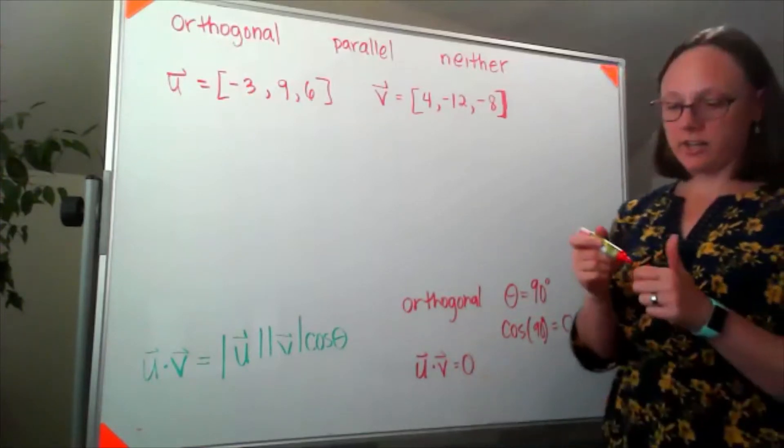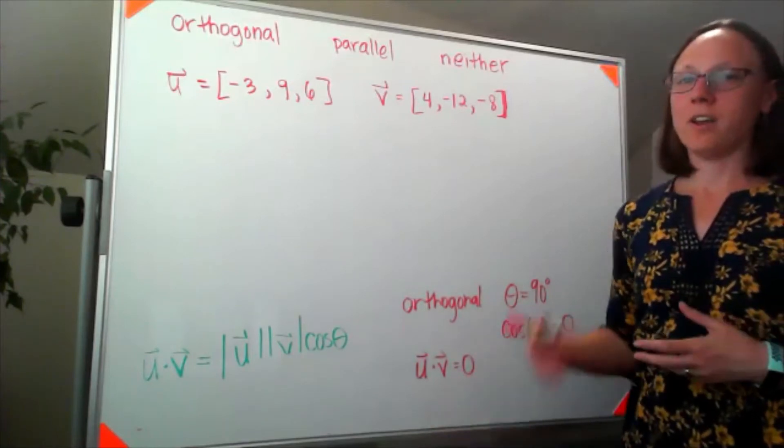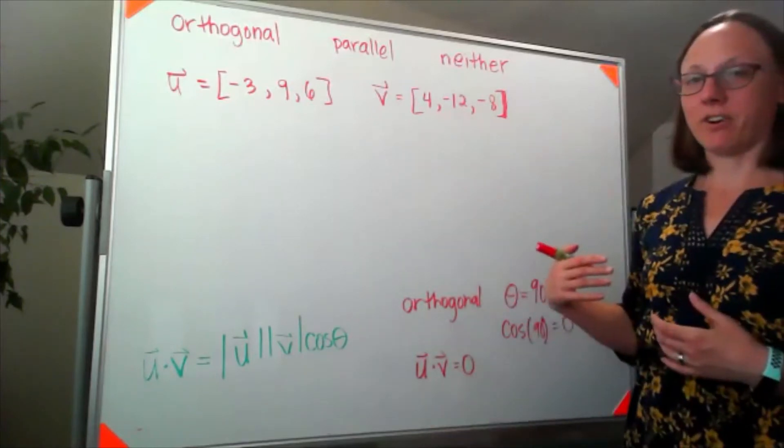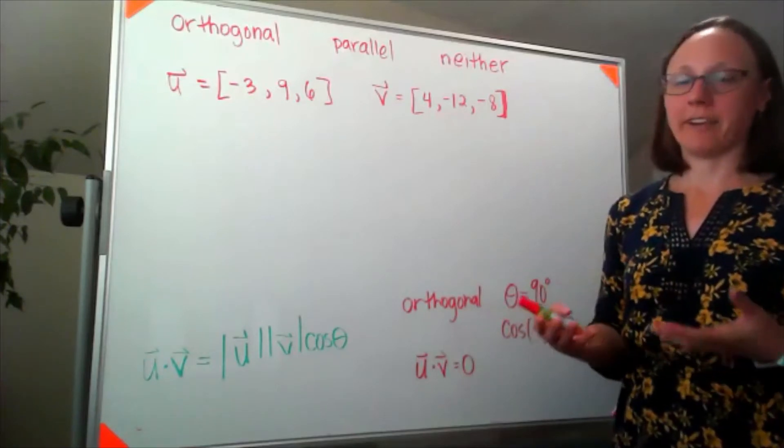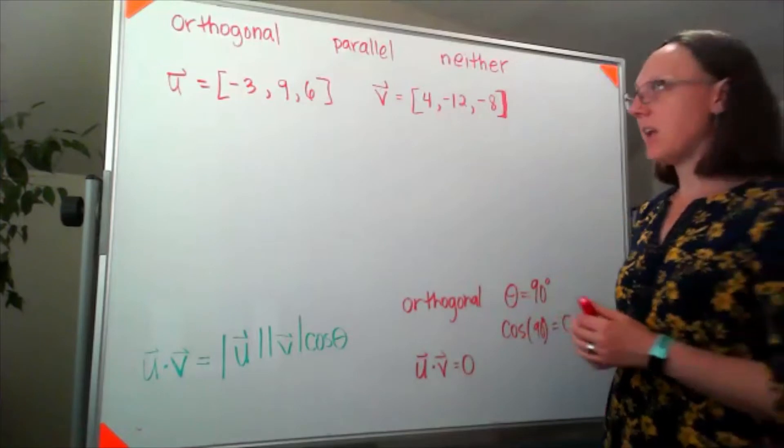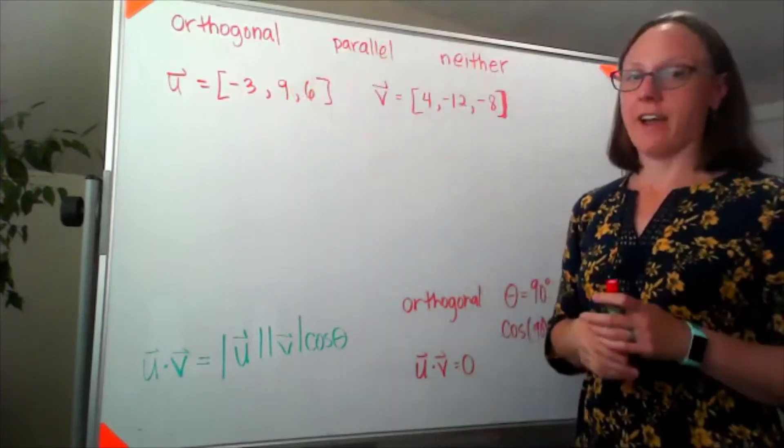And we're actually going to use this over and over again. So this is a really good one to just kind of tuck in the back of your head. If you get a dot product of 0 we know those two vectors are orthogonal. That's usually the fastest one for us to check.